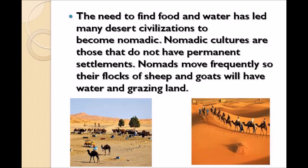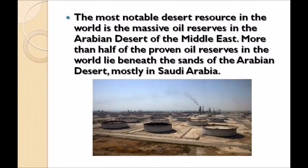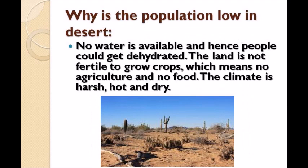The most notable desert resource in the world is the massive oil reserves in the Arabian Desert of the Middle East. More than half of the world's oil reserves lie beneath the sands of the Arabian Desert, mostly in Saudi Arabia. The population of deserts is low because there is no water available, the land is not fertile for crops, and the climate is harsh, hot, and dry.